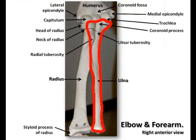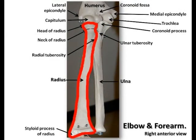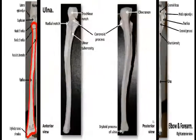When you observe the bones in their side-by-side position, you can see that the ulna is wider at the proximal end at the elbow and narrows towards the distal end at the wrist. The radius is just the opposite — it's narrow at its proximal end and wider at its distal end.